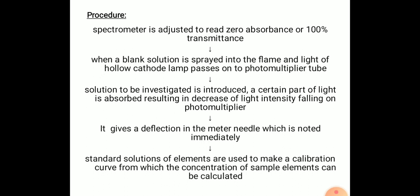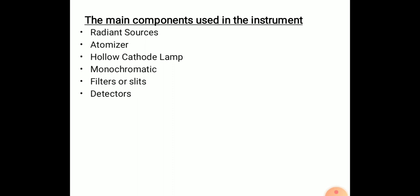Now we will study the instrumentation. These are the main components used in the instrument. First is radiant source. This radiant source generally used is a hydrogen lamp as a continuous source of radiation. Second one is atomizer. Atomizers are generally burners which are used to break the liquid sample into droplets which are then allowed to enter into flame. This atomizer breaks the liquid and allows it to enter the flame. In this process the sample is reduced to atoms if it is molecule.